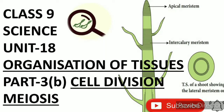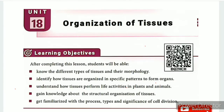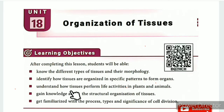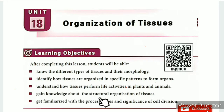Greetings from SS Class 9 Science, Unit 18: Organization of Tissues, Part 3 — Cell Division B: Meiosis. The learning objectives are: know the different types of tissues and their morphology; identify how tissues are organized in specific patterns to form organs; understand how tissues perform life activities in plants and animals; gain knowledge about the structural organization of tissues.